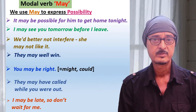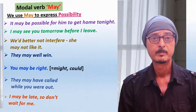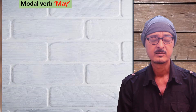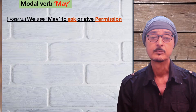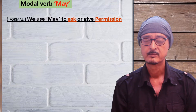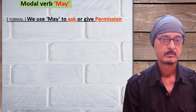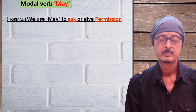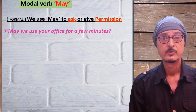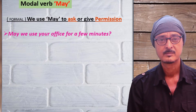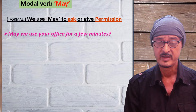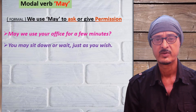The second use of modal verb 'may' is: we use 'may' to ask or give permission. For example: may we use your office for a few minutes? You may sit down and wait just as you wish.